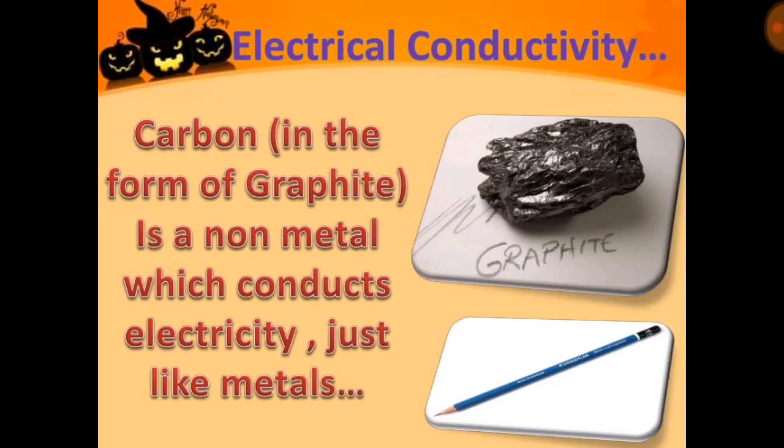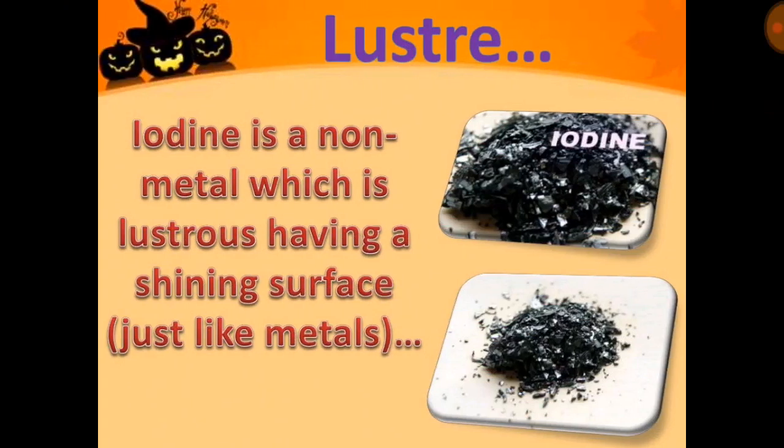Some exceptional cases are also there. Carbon in the form of graphite is a non-metal which conducts electricity just like metals. And lustre — iodine is a non-metal which is lustrous, having a shining surface just like metals.